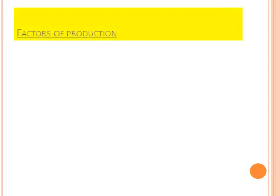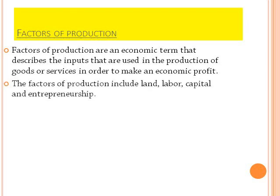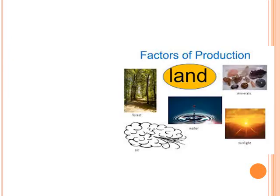Our next topic is factors of production. Factors of production are an economic term that describes the inputs used in the production of goods or services in order to make an economic profit. There are four factors of production: land, labor, capital and entrepreneurship. We use these four types of factors to manufacture a good or a service.